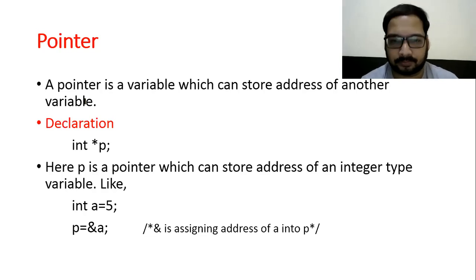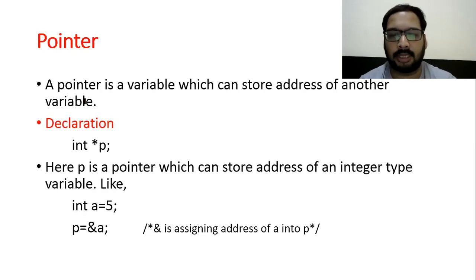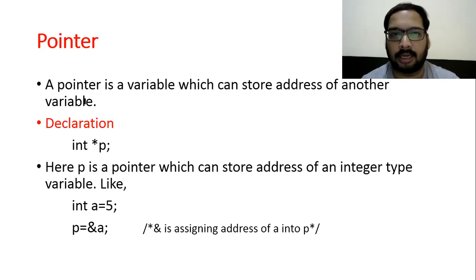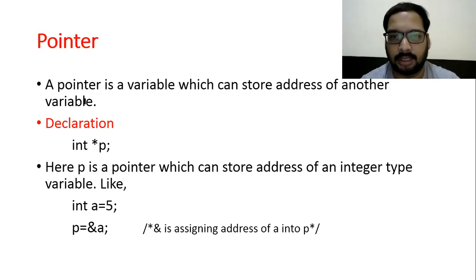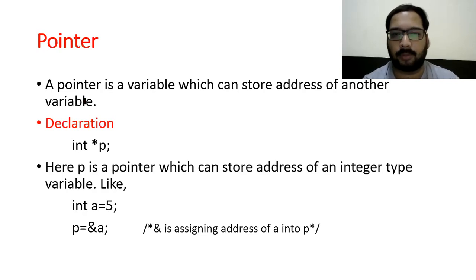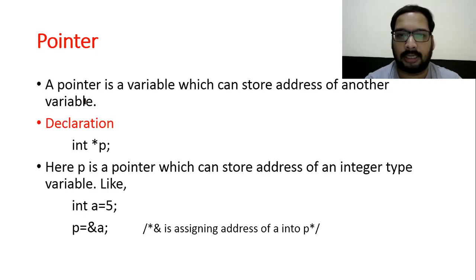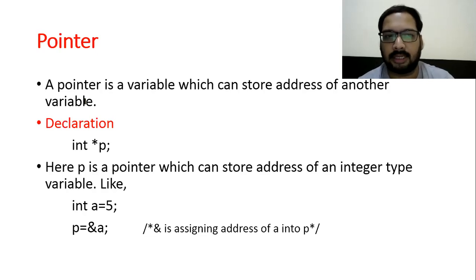If we compare the variable to our home, the variable is like a home and there is a home address. Similarly, the variable occupies memory and that memory also has an address. So basically, the Pointer is like a landmark — if there is a landmark, you can easily reach the destination through it.